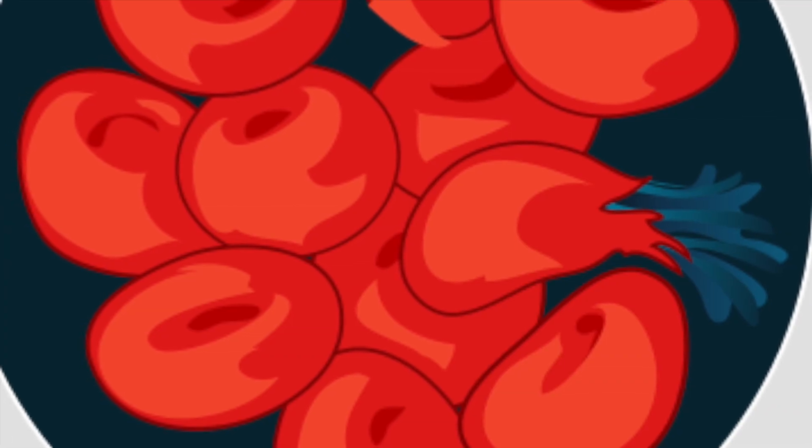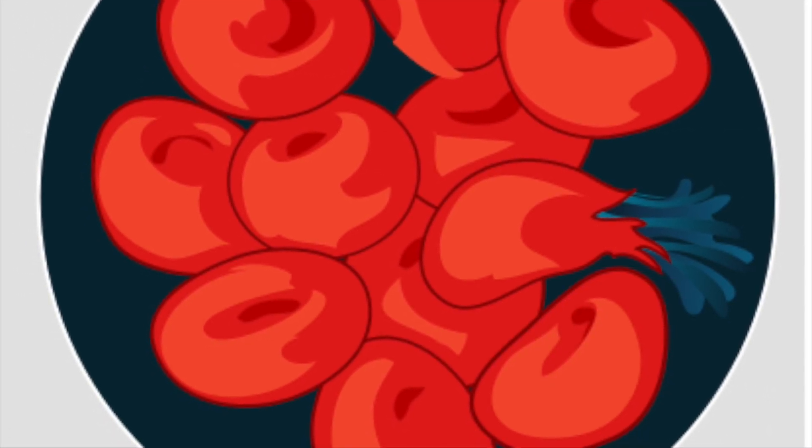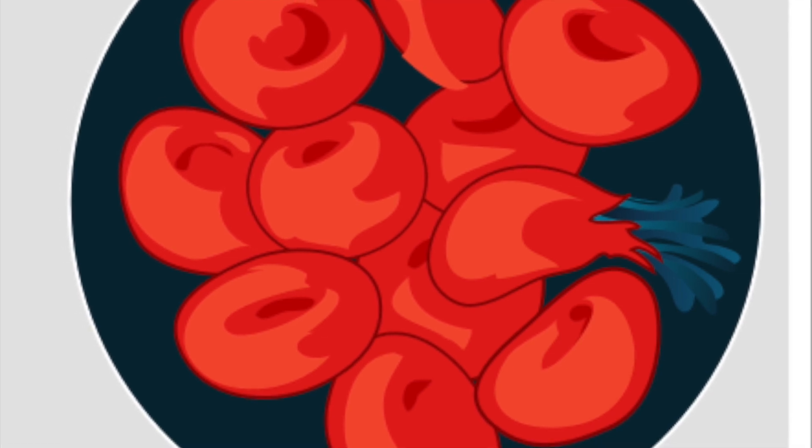Sometimes osmosis can cause big problems. When the solution outside the cell is more dilute, water will move into the cell and this may cause the cell to swell up and burst. However, if the outside of the cell is too concentrated, water will move out of the cell by osmosis and the cell will shrivel up and die. So the cell can either swell up and burst, or shrivel up and die.